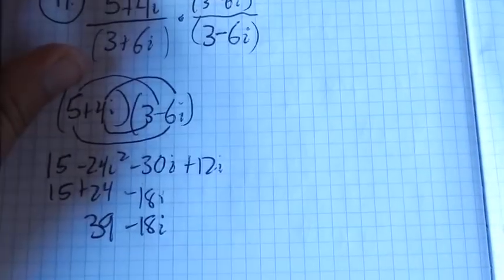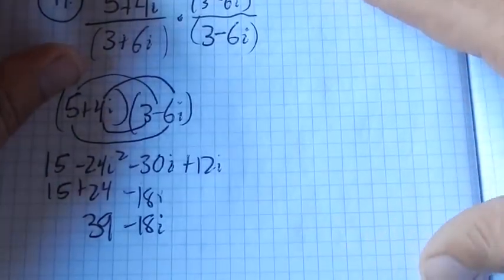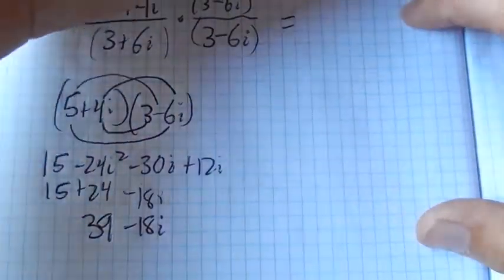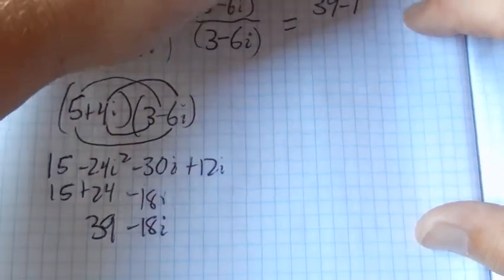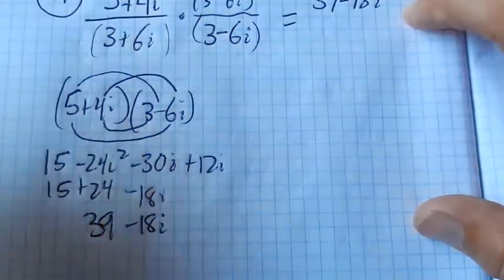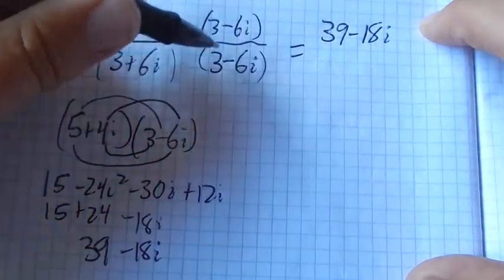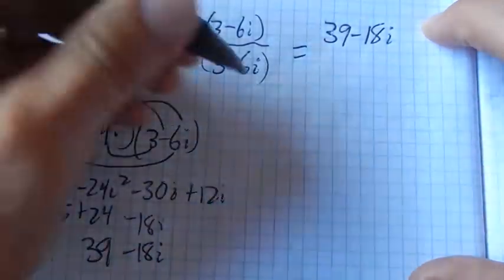Now for my denominator: (3 + 6i)(3 - 6i). Notice if I do that...